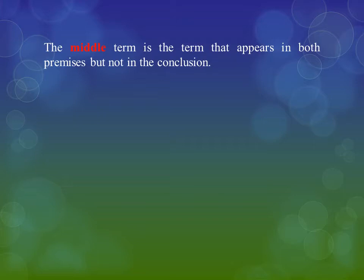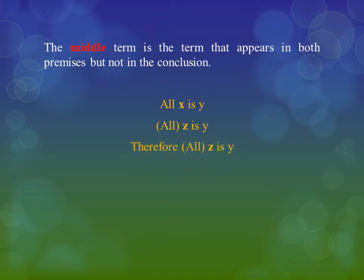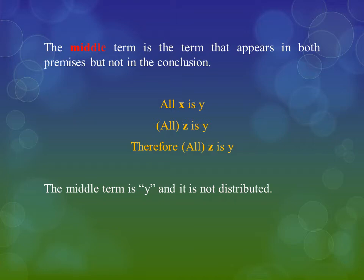What about the middle term, since this is called the fallacy of the undistributed middle? The middle term is the term that appears in both premises but doesn't show up in the conclusion. For instance, if I say all X is Y and all Z are Y, therefore all Z are Y — the term that appears in both premises is Y. And in this case, the term Y is not distributed.